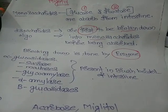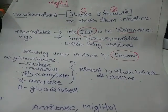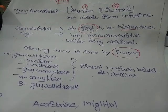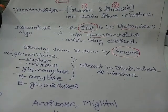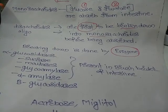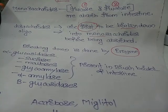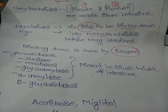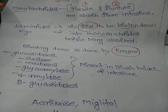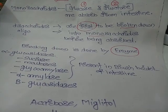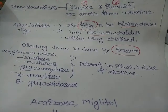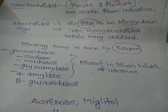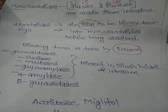Monosaccharides like glucose and fructose are directly absorbed from the intestine. Disaccharides and oligosaccharides, however, must first be broken down into monosaccharides before being absorbed.